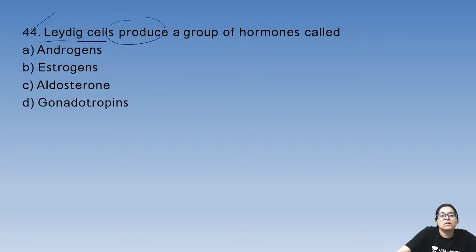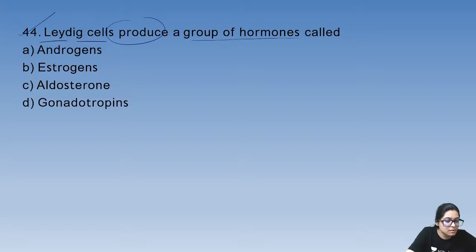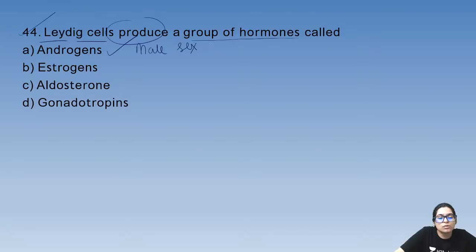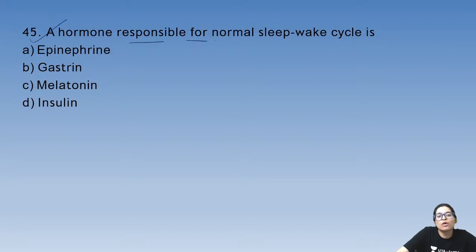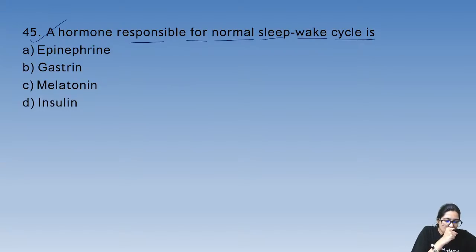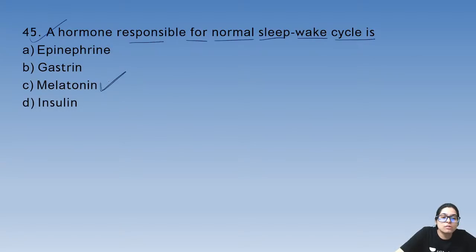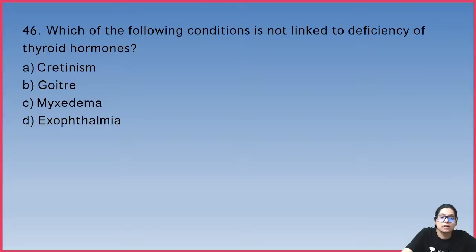Question 44: Leydig cells produce a group of hormones — they produce male sex hormones known as androgens. Question 45: the hormone responsible for normal sleep-wake cycle is melatonin, which maintains the 24-hour diurnal rhythm.